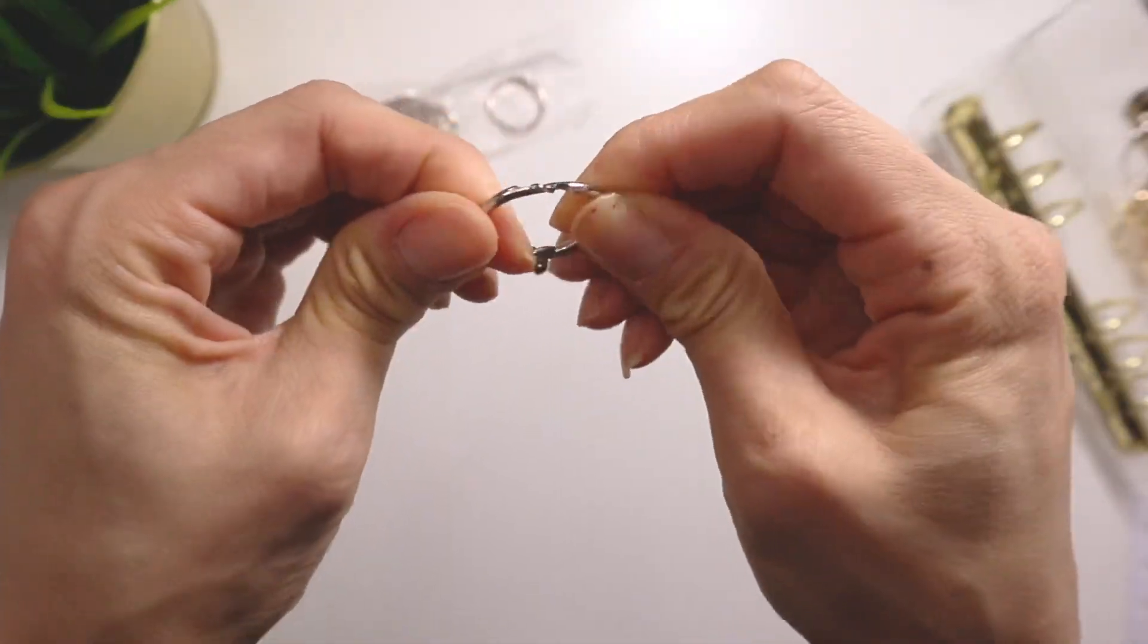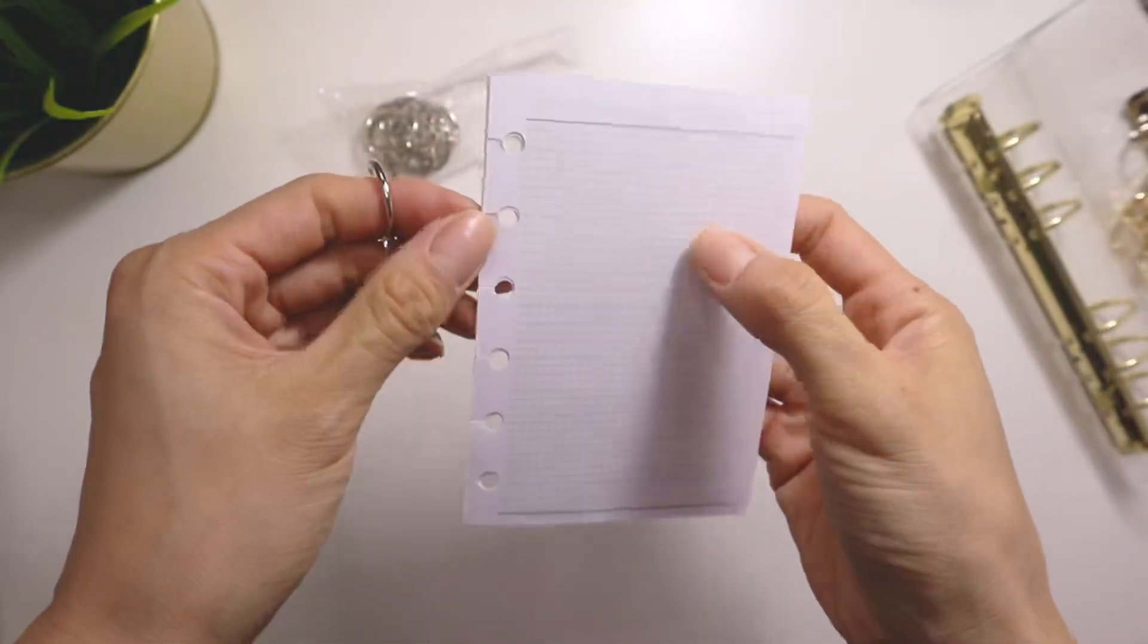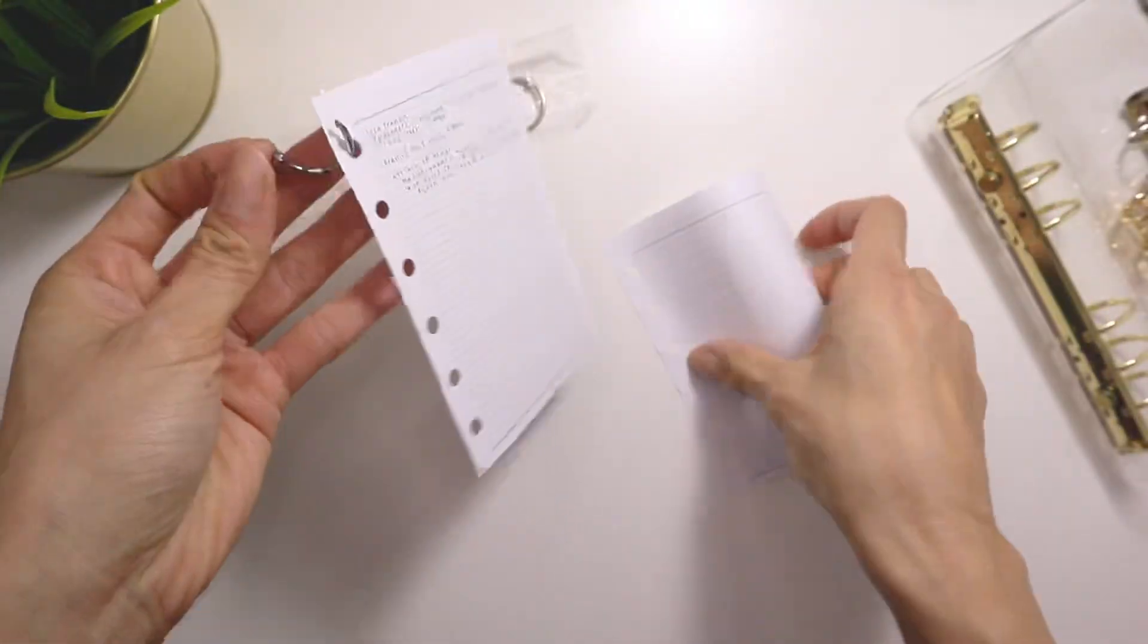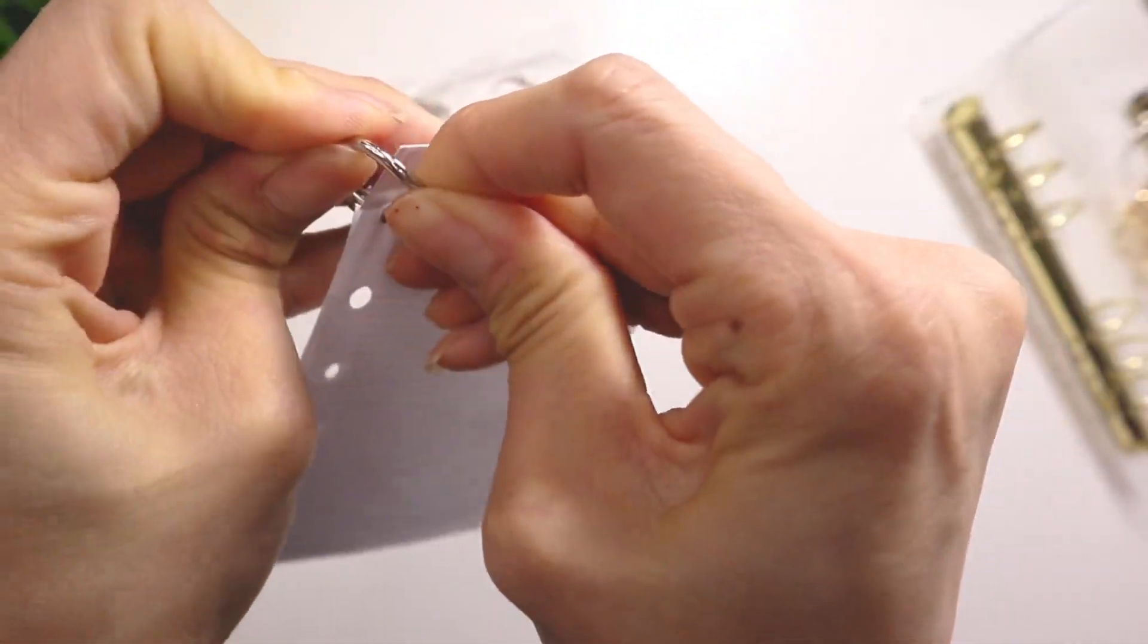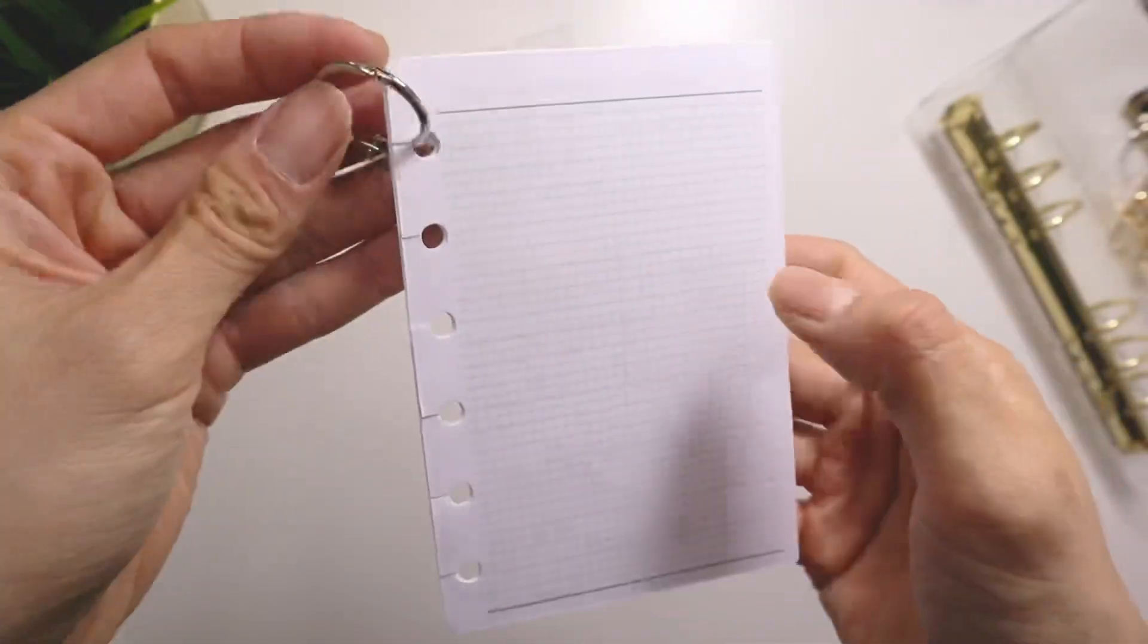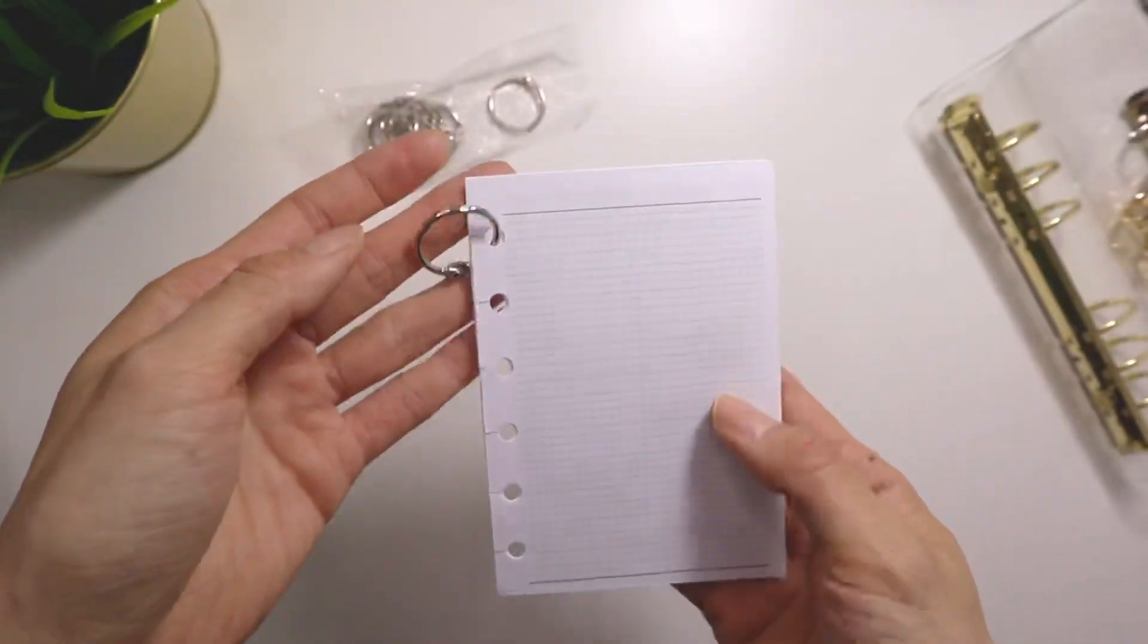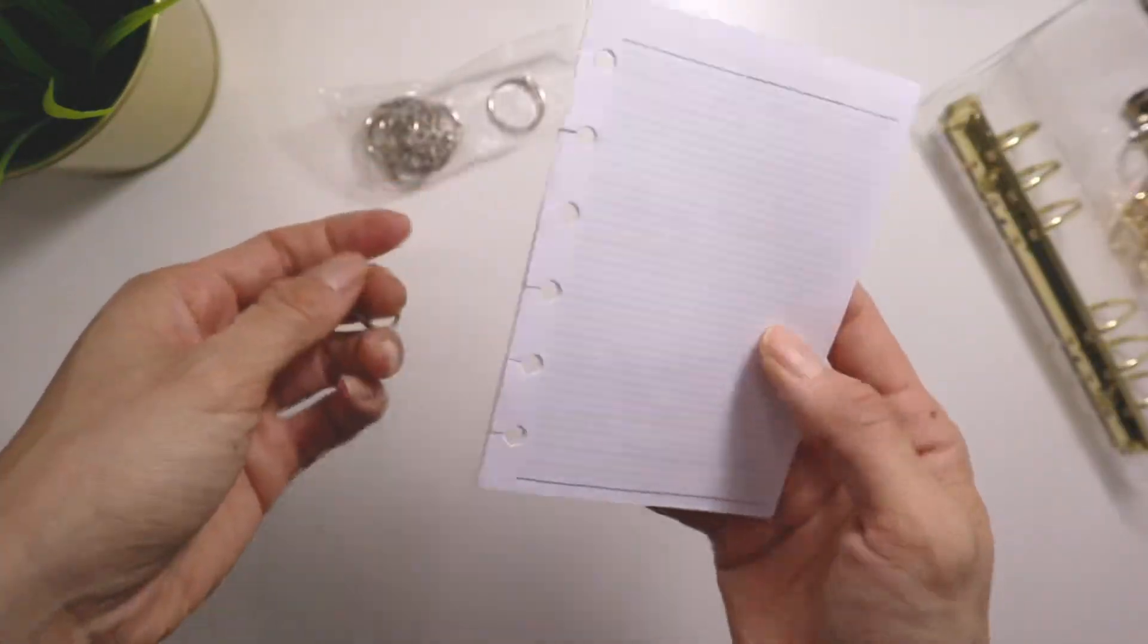But they're just these little rings that you open up like this. And so if you had a stack of inserts, for example, you would just loop it. Oops, I split my inserts. So I got to be a bit more careful. But you would just do that. And you can put one or you can put many rings on your stack of inserts depending on what you want.